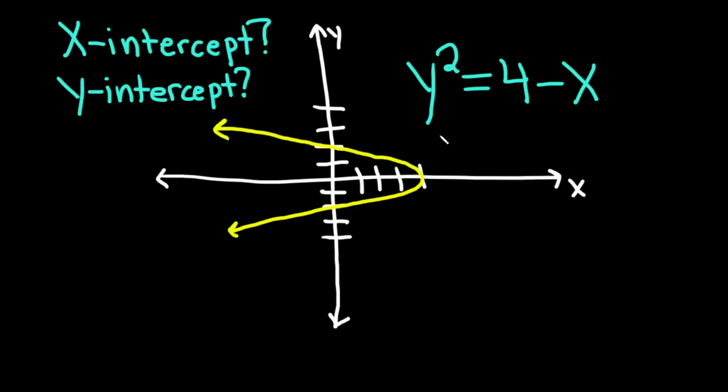Hello, in this video we're given the graph of an equation y² = 4 - x and we're being asked to find the x-intercept and the y-intercept. There might be more than one of each, but I just wrote intercept to keep it simple.